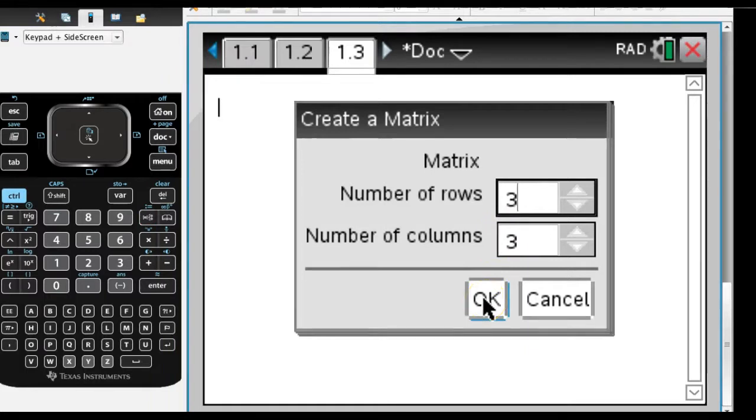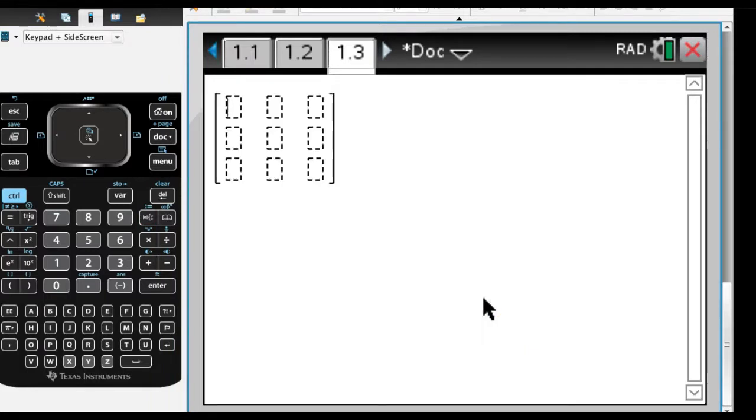Now, our first matrix is a 3 by 3. So let's put this in. And so then I'm just going to type in the numbers, 2, and I can go tab, 0, tab, 1, tab, and it will just keep on going. 1, 3, 0. And negative 2, 1, oh, forgot to tab, 1, 1. So that's my first matrix.